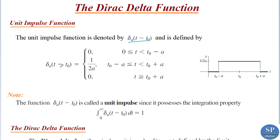That is, the unit impulse function δₐ(t − t₀) has the value 1/(2a) for t in the interval t₀ − a to t₀ + a, and 0 elsewhere. The graph of this function is 0 from 0 to t₀ − a, then 1/(2a) from t₀ − a to t₀ + a, and 0 for t ≥ t₀ + a.